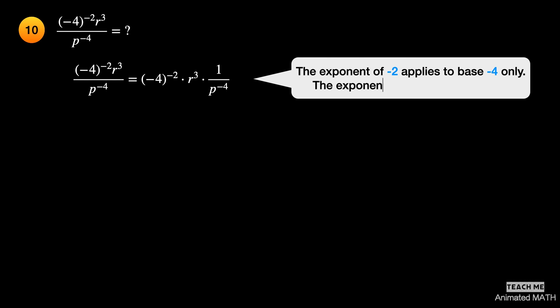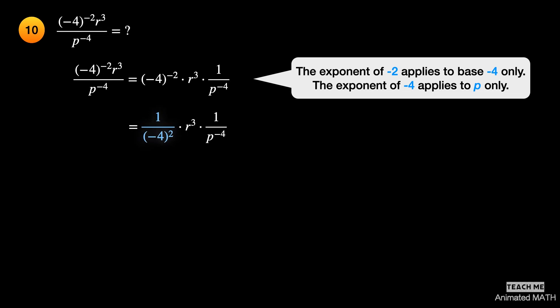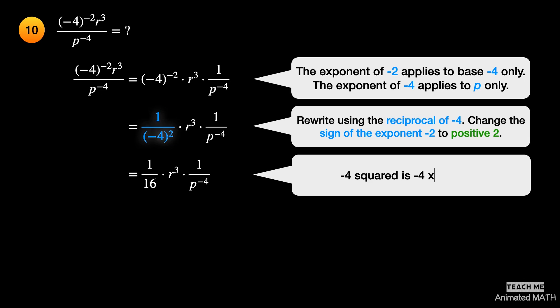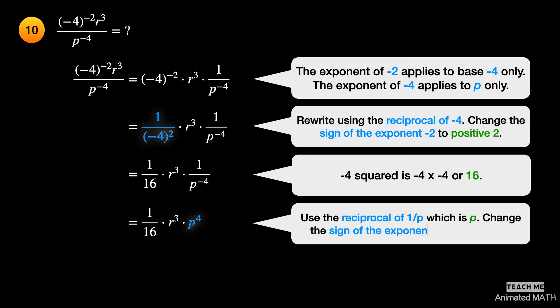The exponent of negative 2 applies to base negative 4 only, and the exponent of negative 4 applies to p only. Rewrite the expression using the reciprocal of negative 4, then change the exponent from negative 2 to positive 2. The square of negative 4 is 16. 1 over p to the negative 4th power is simply equal to p to the 4th power. The simplified form of the whole expression is r cubed times p to the 4th power over 16.